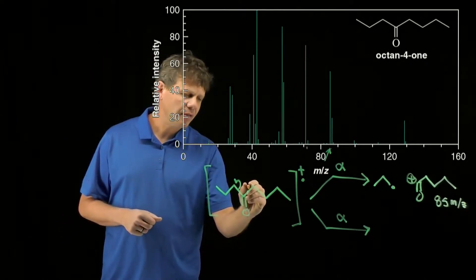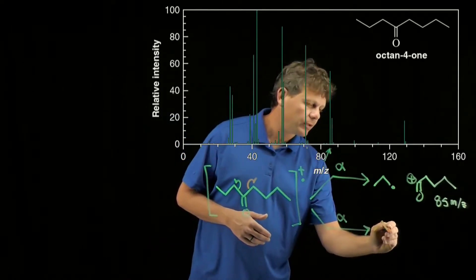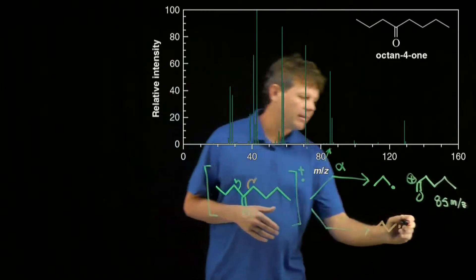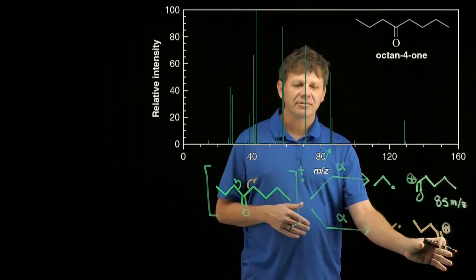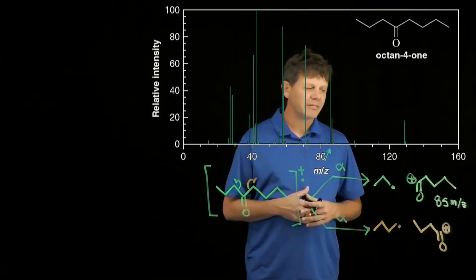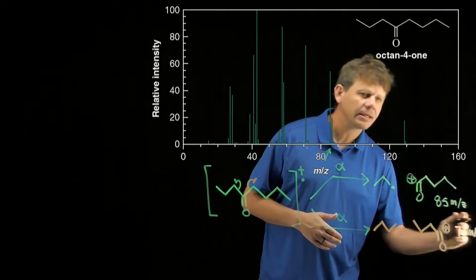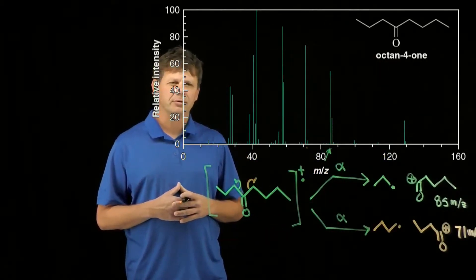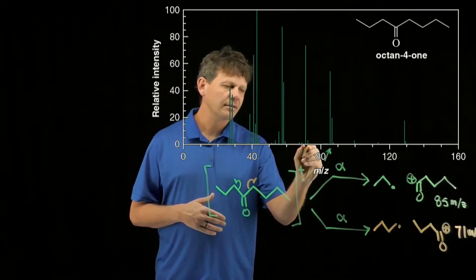We can do alpha cleavage on the other side. The difference is that now we're going to get a four carbon radical fragment, which won't be detected, and this other carbocation. The mass of this cation is 71, and so we would expect to see a peak at 71 mass to charge ratio. I ran off the screen just a little bit. Do we see something at 71? In fact, we do.